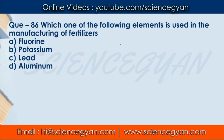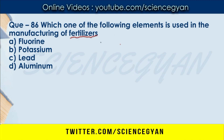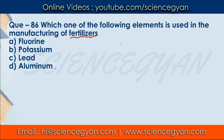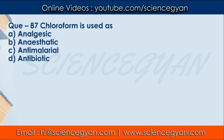Question number 86: Which one of the following elements is used in manufacturing of fertilizers? When we add fertilizers to soil for crop plantation to improve production, what is the main component of fertilizers? Four options are given: fluorine, potassium, lead, or aluminium. The correct answer is B — potassium. The main basis of fertilizers is potassium, phosphorus, and nitrogen. So B is the correct answer.